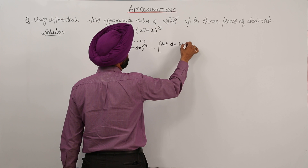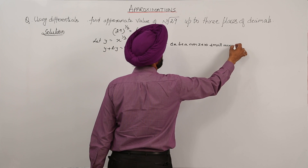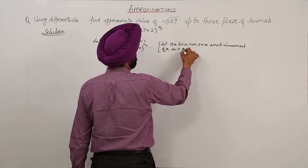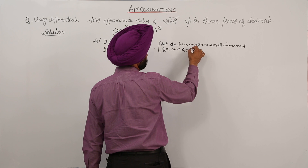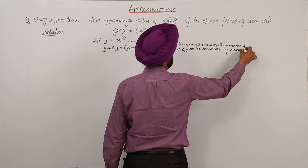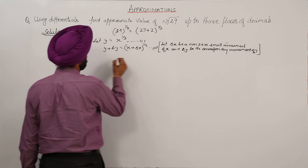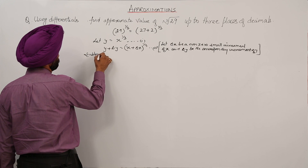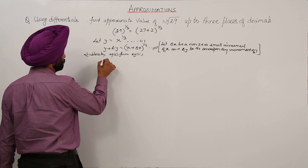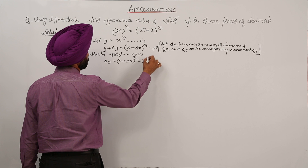Let delta x be a non-zero small increment of x, and delta y be the corresponding increment of y. Now subtracting equation 1 from equation 2, we get: delta y is equal to (x plus delta x) raised to power 1/3, minus x raised to power 1/3.